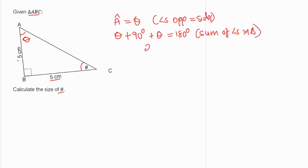So we have 2 theta plus 90 degrees is equal to 180 degrees. We can subtract 90 from both sides. What we have is 2 theta is equal to 90 degrees.